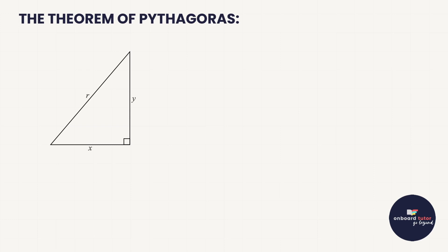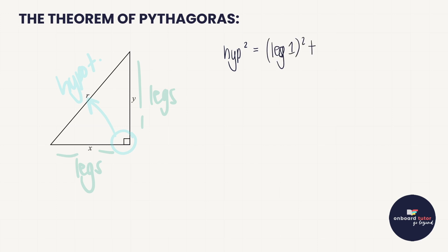I've got a triangle here and I've called the sides x, y, and r. It is specifically a right-angled triangle, which means it has a hypotenuse. Over the years people have started calling the other two sides the legs because they make an L-shape. The theorem of Pythagoras says that the hypotenuse squared is equal to the sum of those two legs squared — leg one squared plus leg two squared.